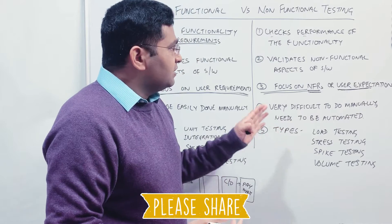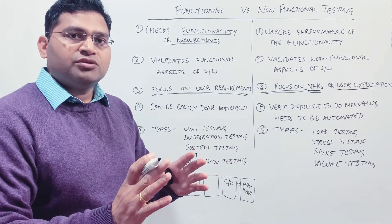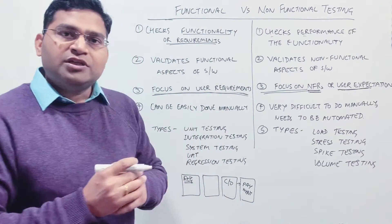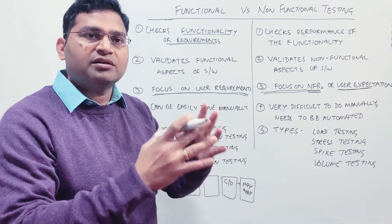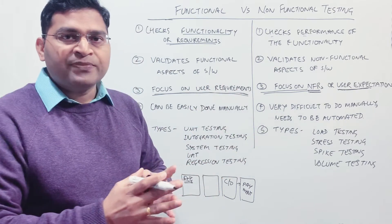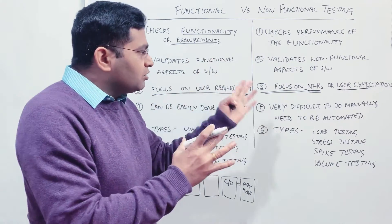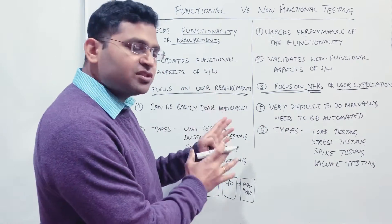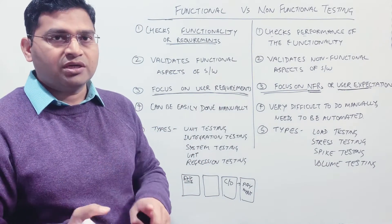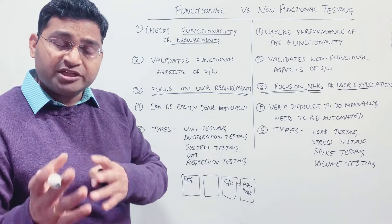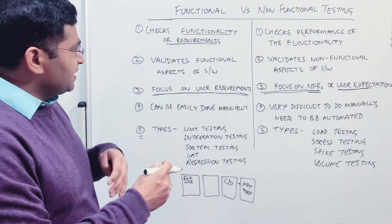Non-functional testing, however, is very difficult to do manually. For example, if the requirement is 5,000 concurrent users with a response time under five seconds, you would have to coordinate 5,000 people to access the website at the exact same time — which is nearly impossible, and your application may need to handle even 100,000 users. So non-functional testing must be automated. Tools available for this include LoadRunner, NeoLoad, and JMeter, which is a very popular open-source tool.